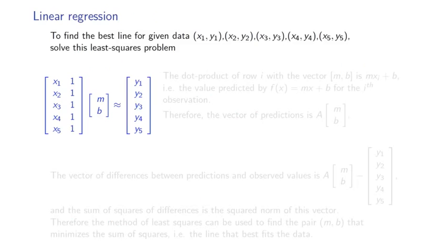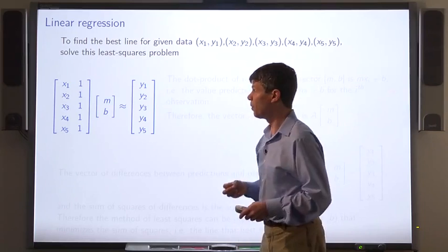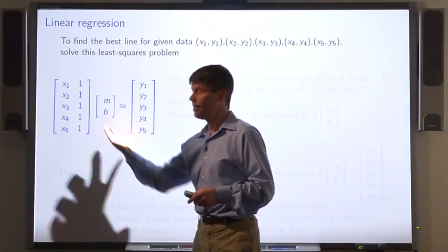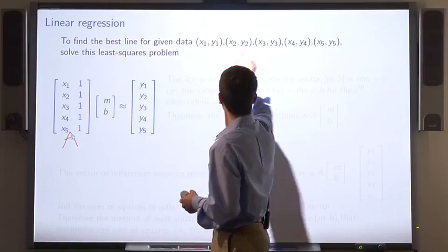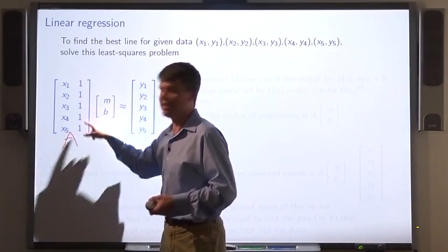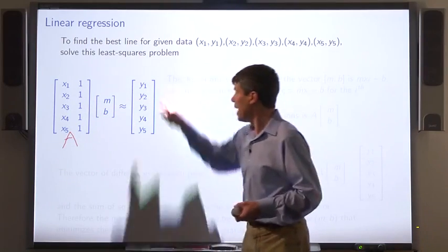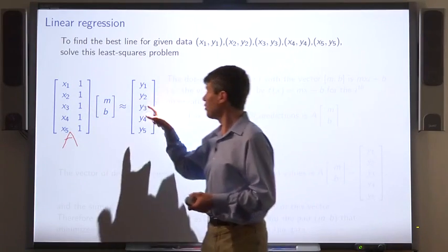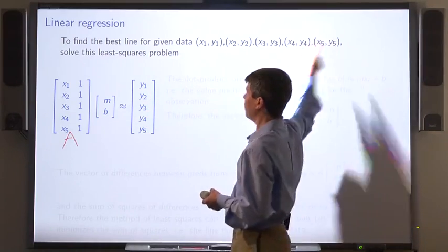To find the line that best fits the data, we used our algorithm for least squares. We formulate the problem as this least squares problem, where we have a matrix A whose first column consists of the first coordinates x1, x2, x3, x4, x5, and whose second column just consists of 1's. The unknowns are m and b. And the right-hand side vector consists of y1, y2, y3, y4, y5.